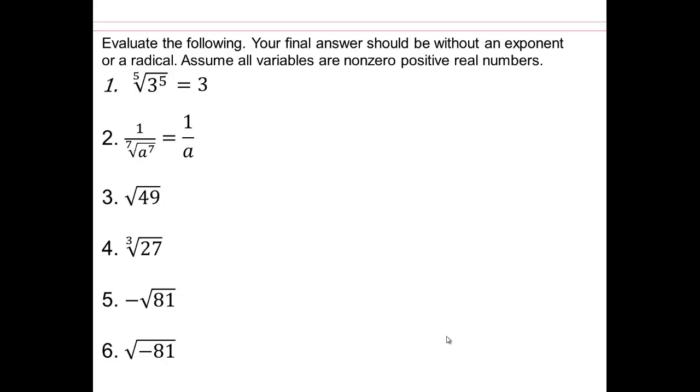Here you have 7 over 7 or 8 to the 1. So again, notice the connection. When you're dealing with positive real numbers, when you have index and the exponent of the base on the inside match, you just end up with the variable or the number because it's 5/5, 7/7, and so on.